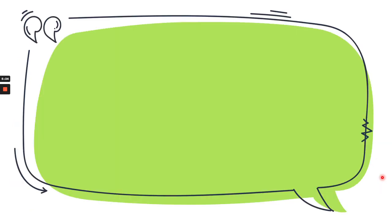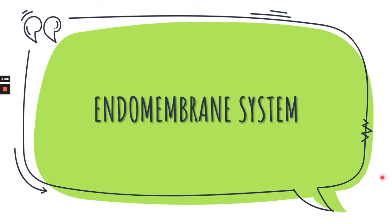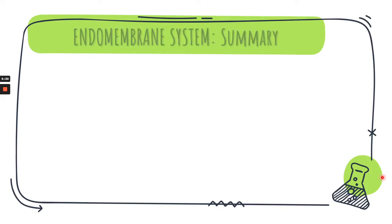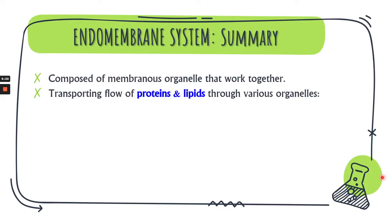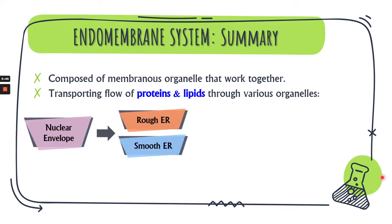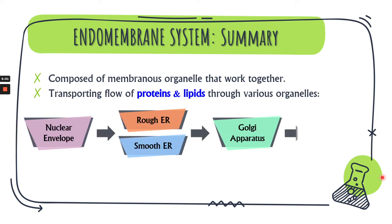Next, let's discover the endomembrane system as a whole. The endomembrane system is composed of membranous organelles that work together, transporting proteins and lipids through various organelles — starting from the nuclear envelope of the nucleus, then to the rough and smooth endoplasmic reticulum, moving forward to the Golgi apparatus, and releasing vesicles to the final destination, which is the plasma membrane.